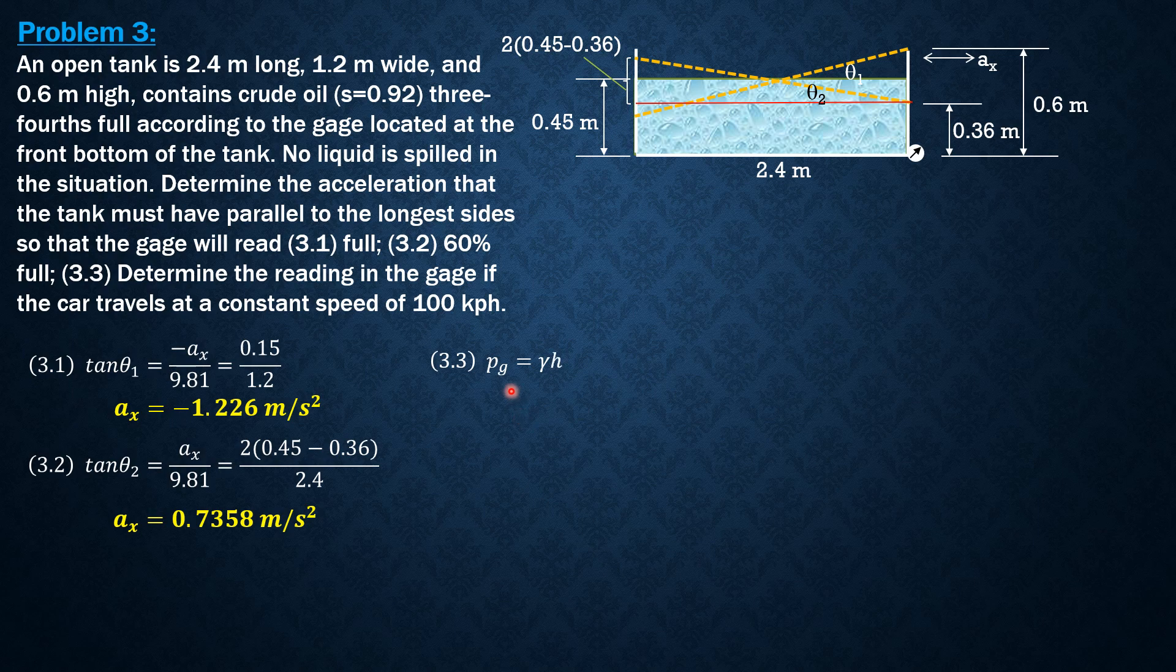So gauge reading is gamma H, so it is equal to 0.92 times 9.81 times 0.45. Solving for the gauge reading, it is equal to 4.061 kilopascals.